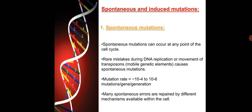Spontaneous mutations are caused by rare mistakes that occur during DNA replication or movement of transposons. The rate of this type of mutation varies from 10⁻⁴ to 10⁻⁶ mutations per gene per generation. Many of the spontaneous errors are repaired by different mechanisms available within the cell.